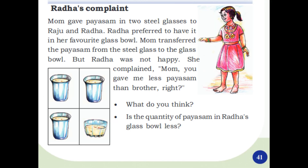Ratha's Complaint: Mom gave Paisam in two steel glasses to Raju and Ratha. Ratha preferred to have it in her favourite glass bowl. Mom transferred the Paisam from the steel glass to the glass bowl, but Ratha was not happy. She complained: Mom, you gave me less Paisam than brother, right?